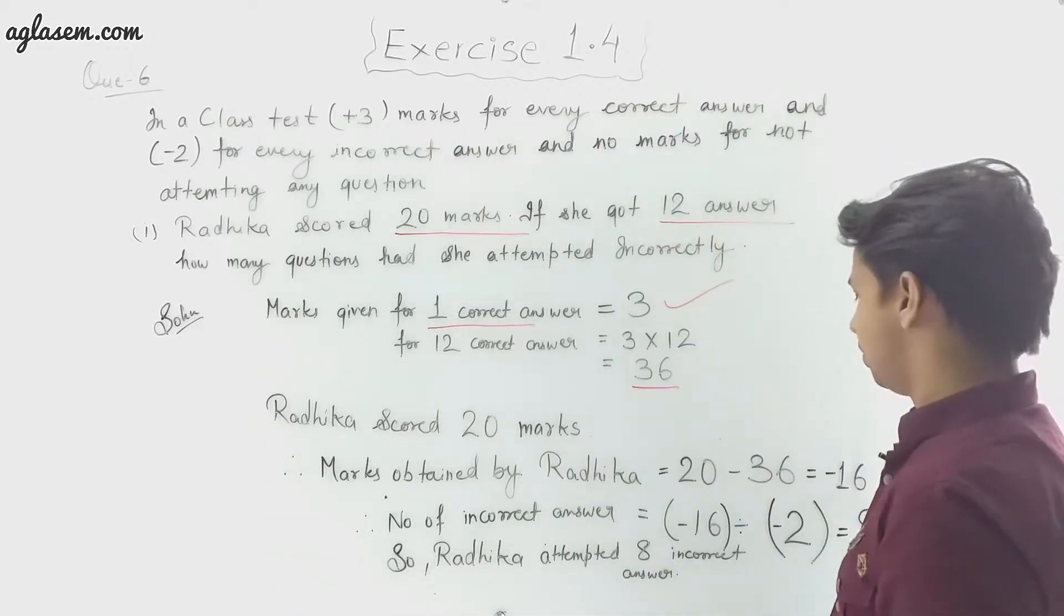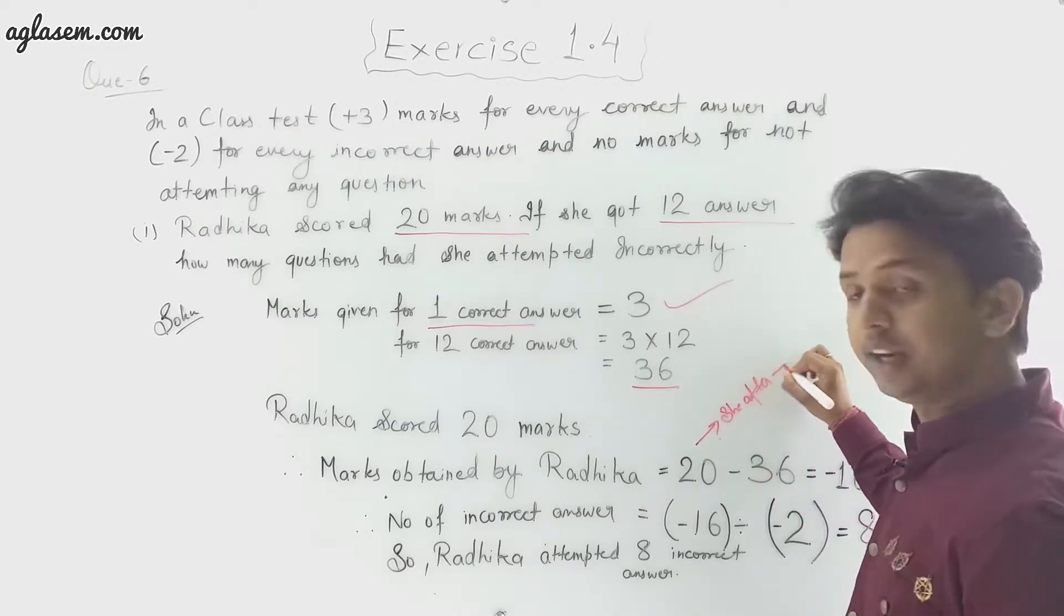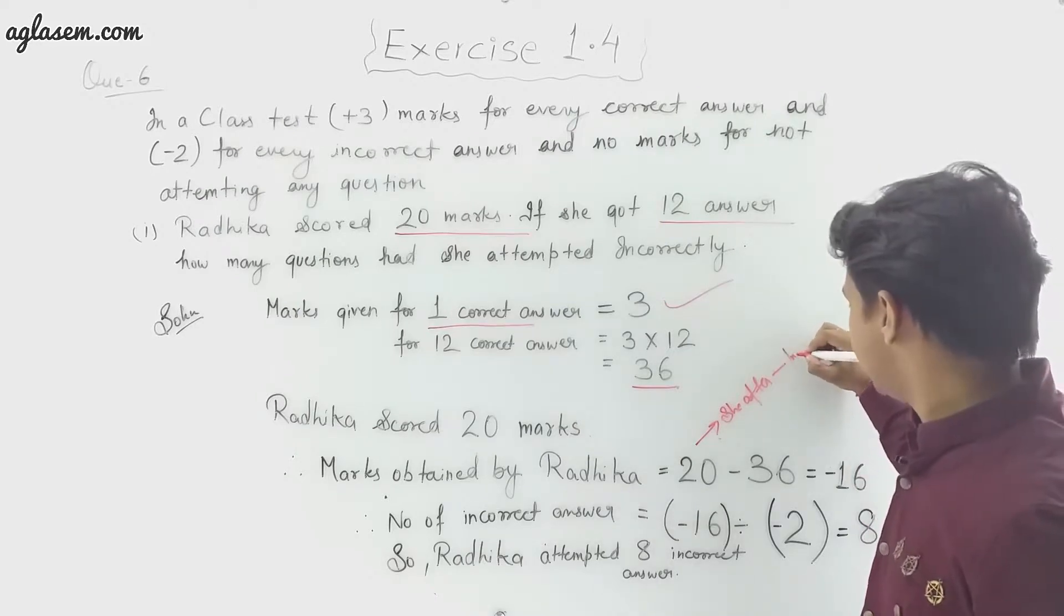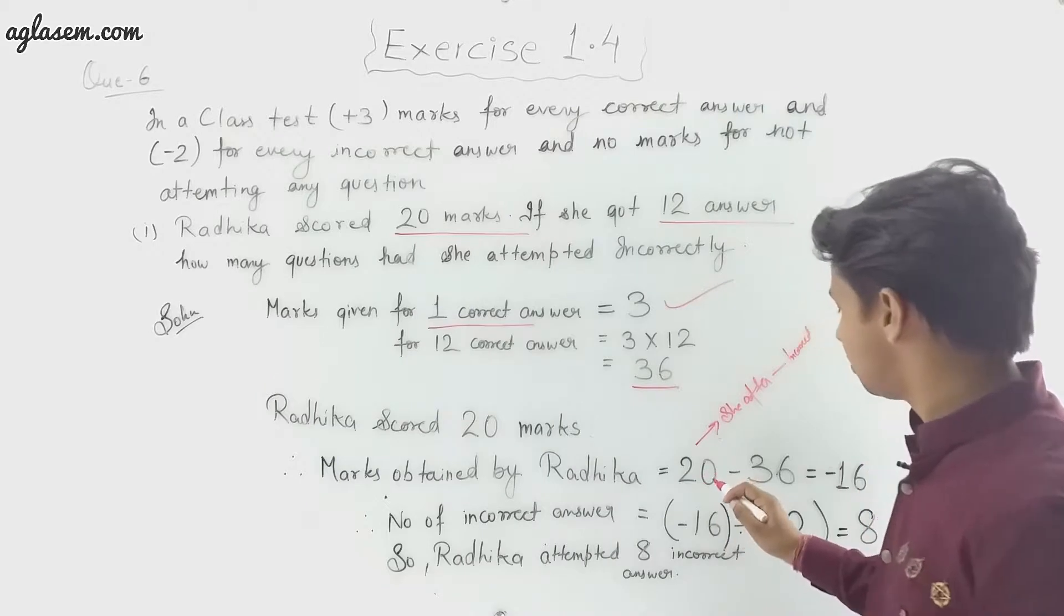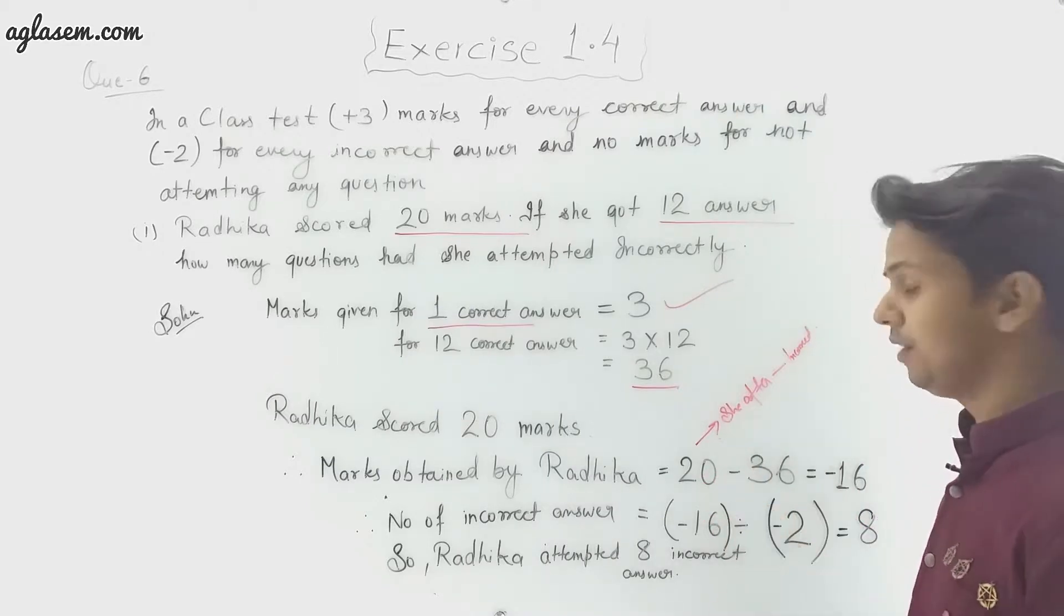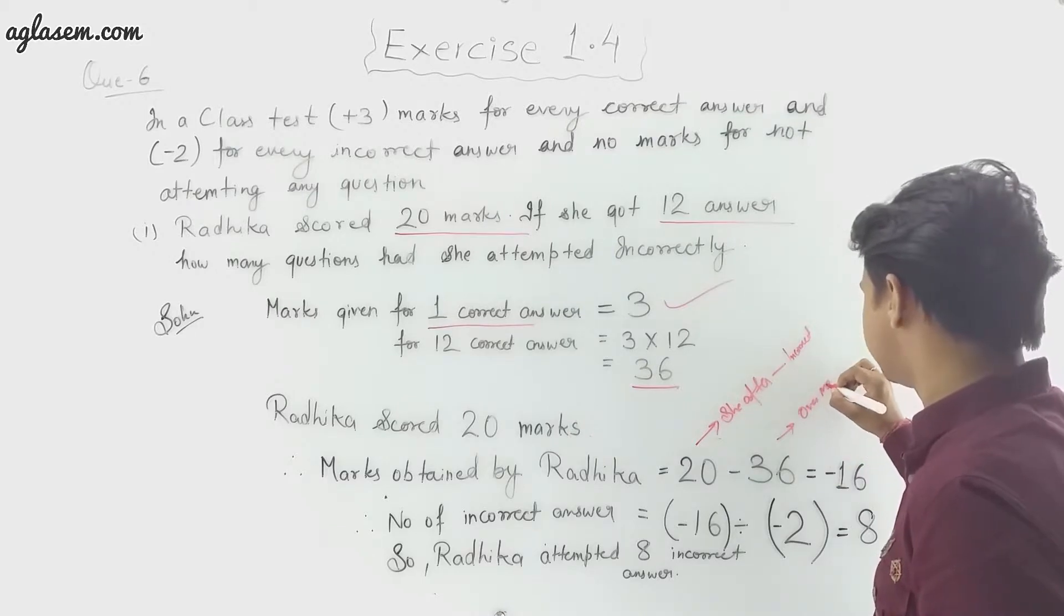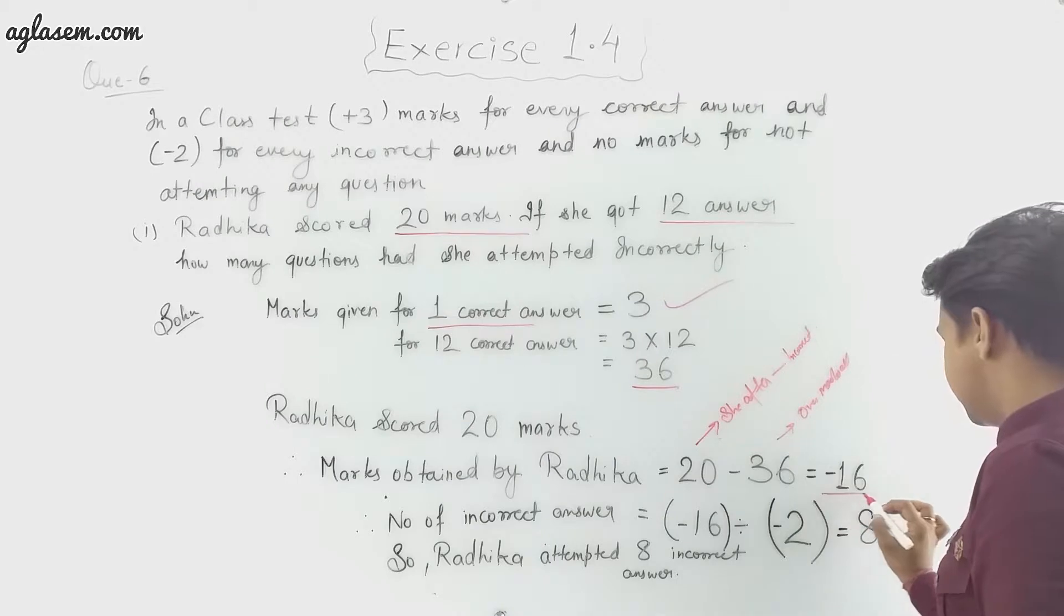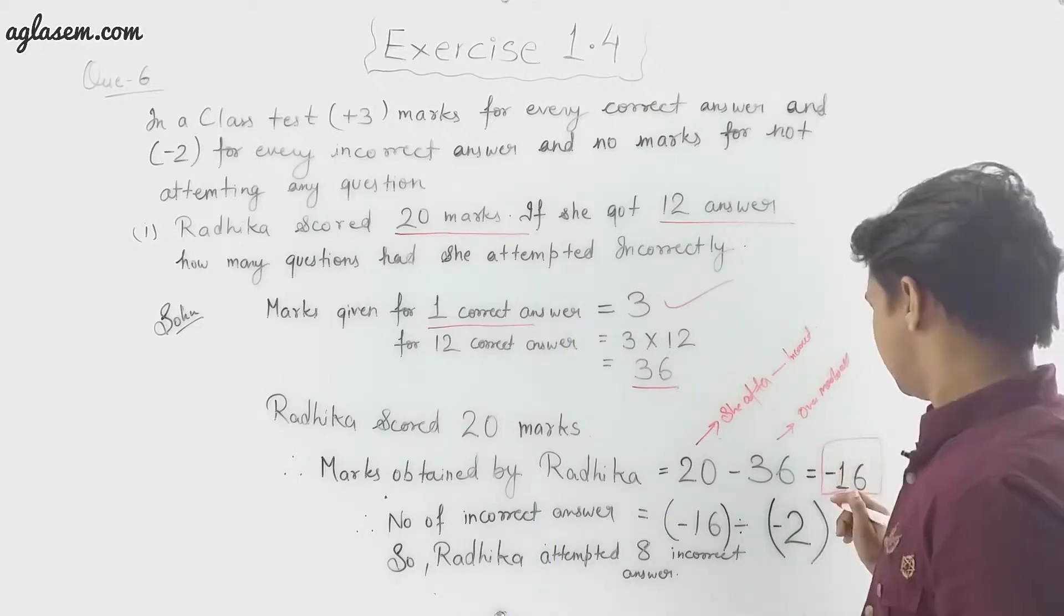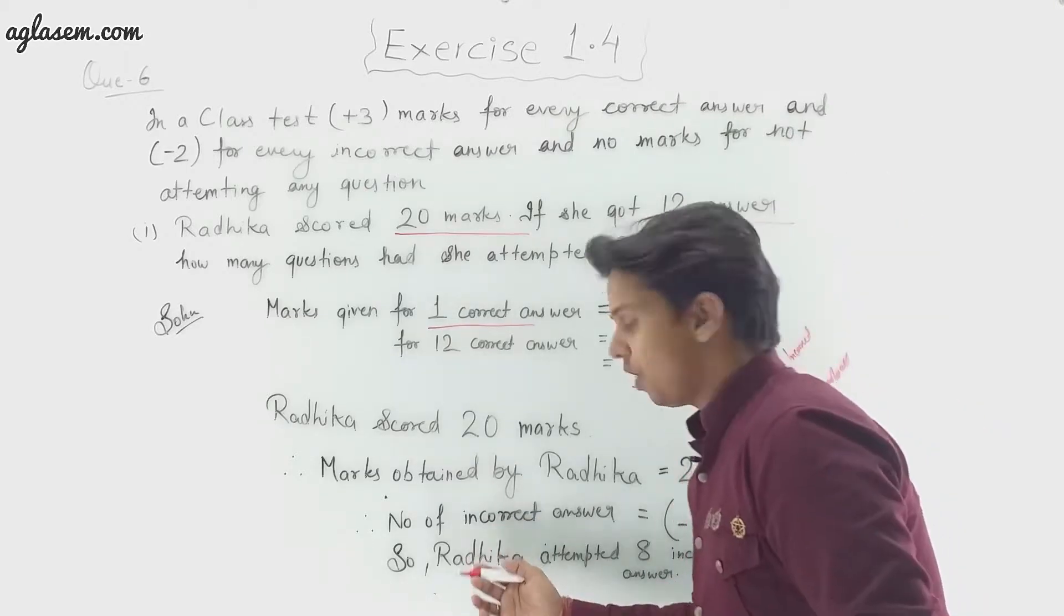Marks obtained by Radhika equals 20, she scored after deducting incorrect answers. So what we have to do is minus this 20 from 36 overall marks. We will get -16.